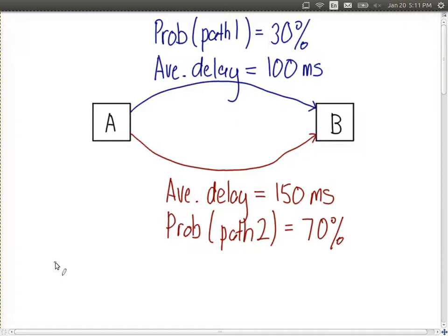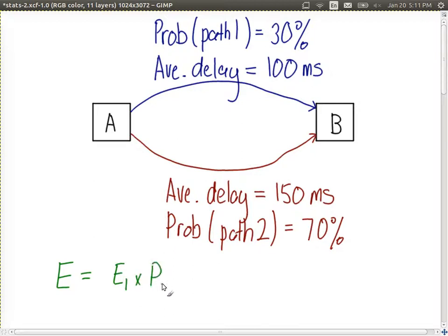So in this case we can look at the total expectation, that is the total average delay in the system. So we have the total expected value is the sum of the expected value for path 1 times the probability of using path 1 plus the expected value for path 2 times the probability of using path 2.